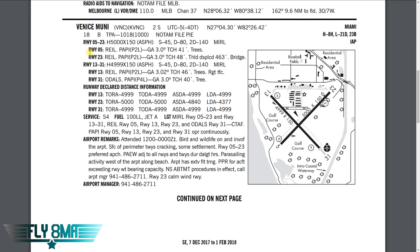Runway 23 has REILs — the flashing lights at the end — and two-light PAPIs on the left side of the runway. Glide angle three degrees, threshold crossing height 48 feet. That's based on how far down the runway they're mounted. There is a displaced threshold of 463 feet on runway 23 due to a bridge. So when landing on runway 23, you land 463 feet down the runway where the start of the landing surface is, then further on where the PAPIs and aiming points painted on the runway will bring you.